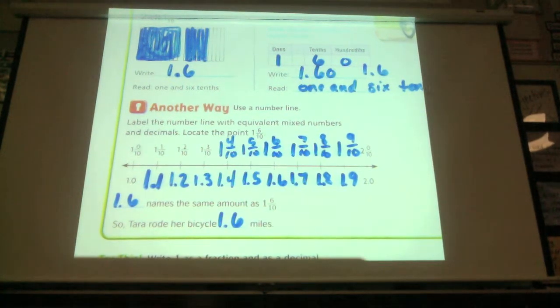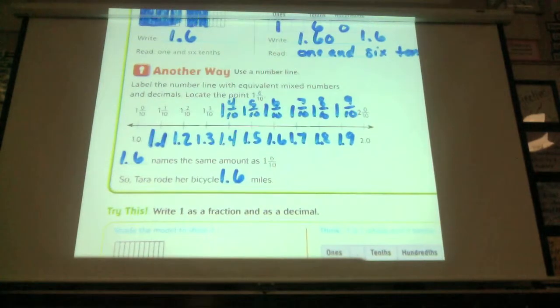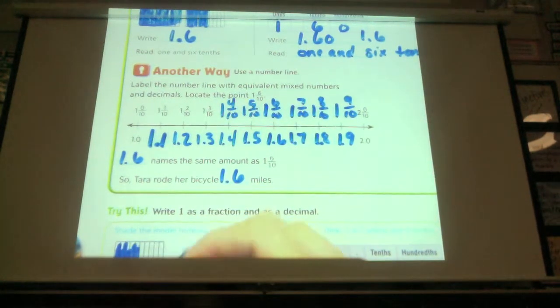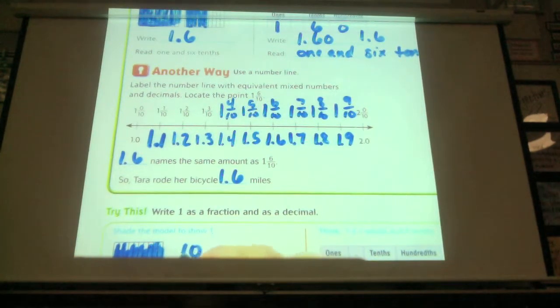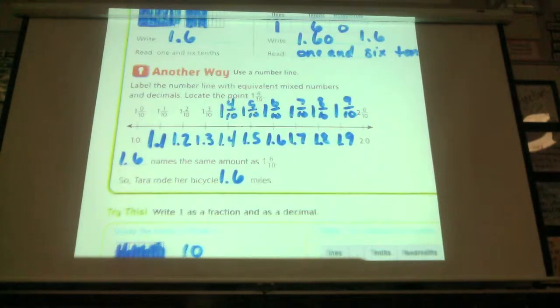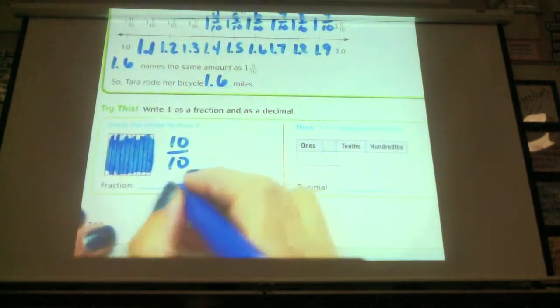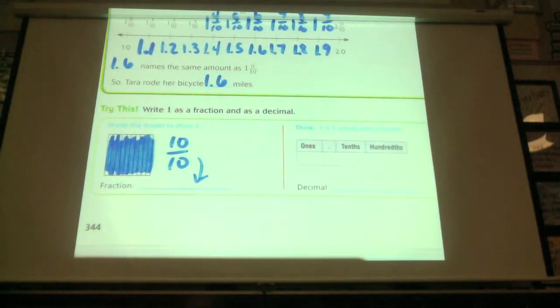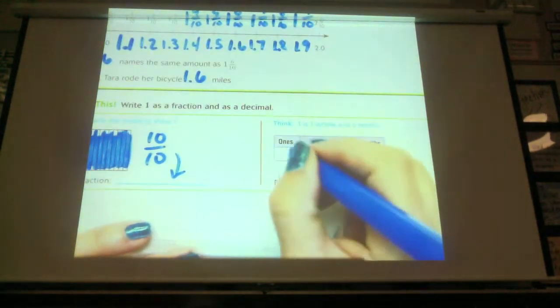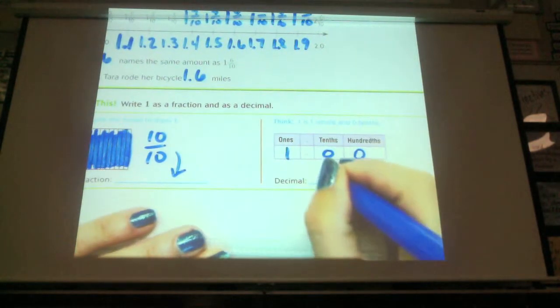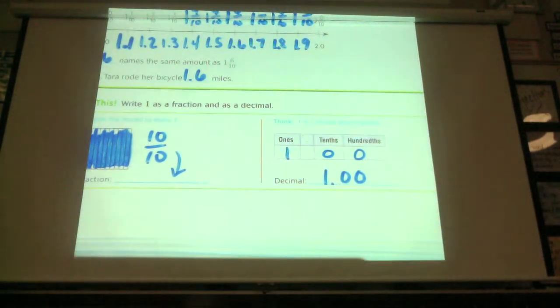It says down here, write 1 as a fraction and a decimal. Here's 1 as a fraction. It would look like 10 tenths. I've shaded them all, so it's 10 tenths. That goes right there. And then as a decimal, 1 is a whole number. And there's 0 tenths. Just like if I was writing 1 dollar, it would look like that. So that's not that different.